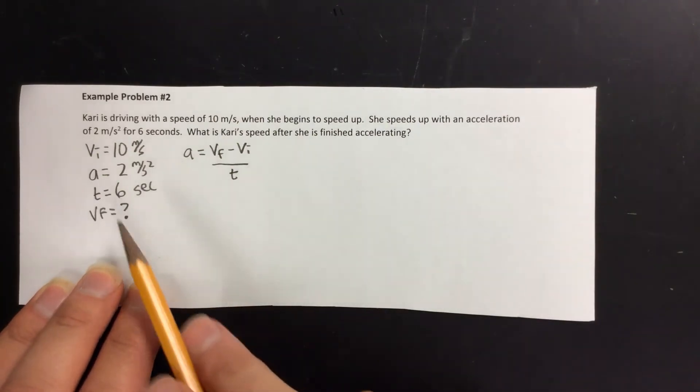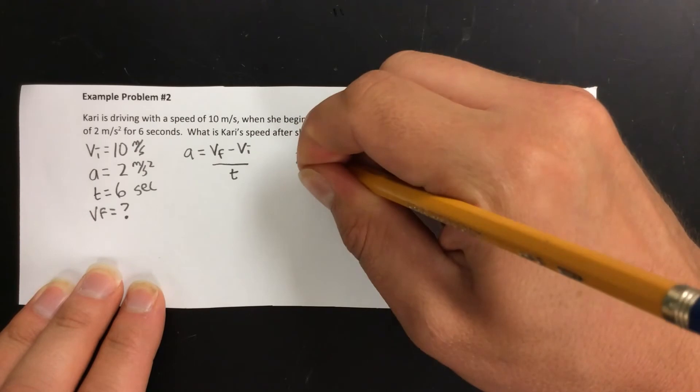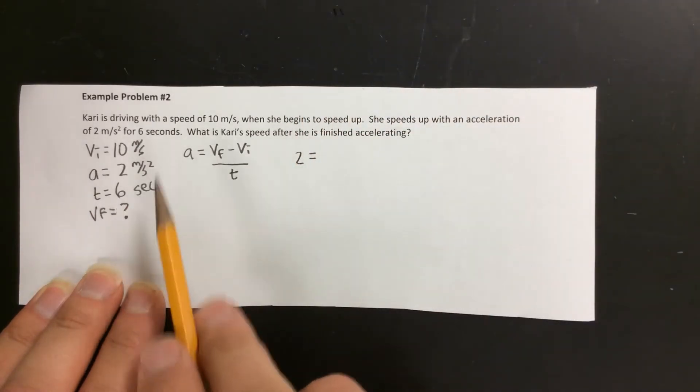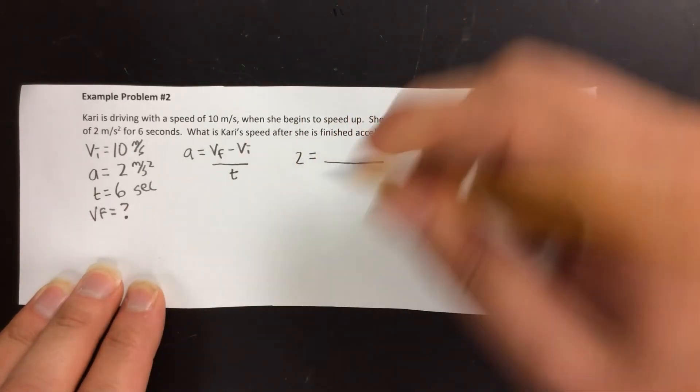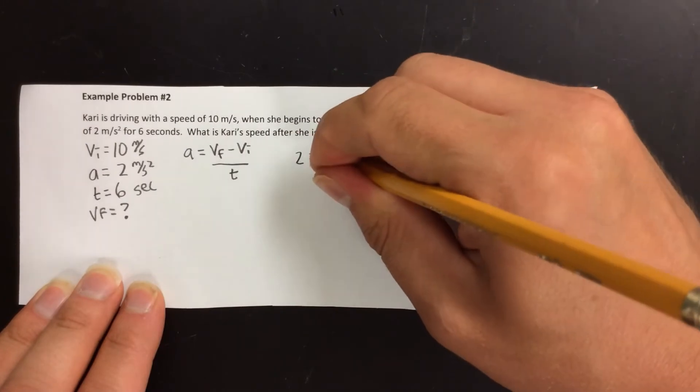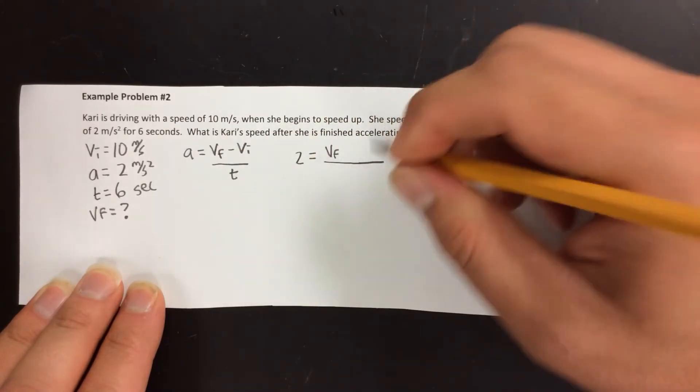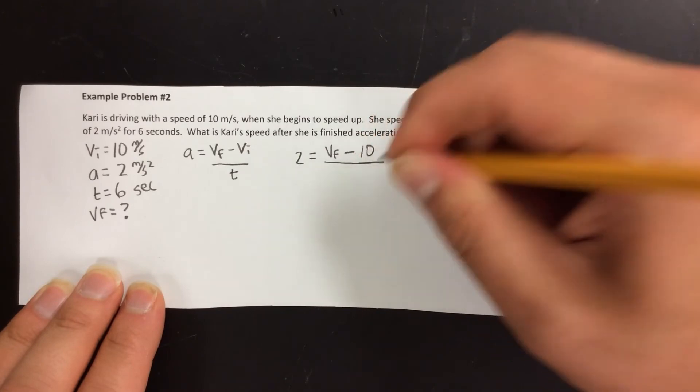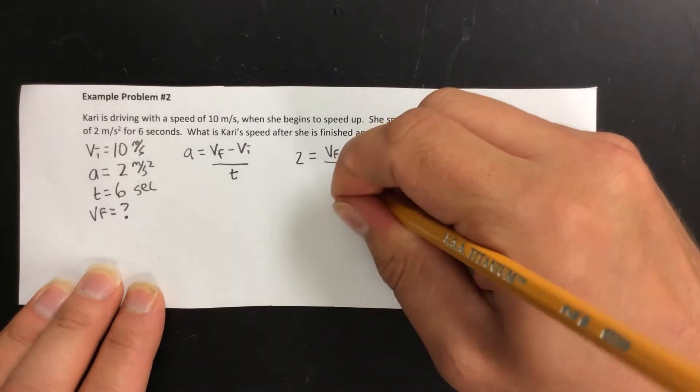Then we plug in the numbers. So we know a equals 2. And then on our fraction here we don't know VF, so we're going to leave that as VF minus VI which we know is 10 all over t which is 6.